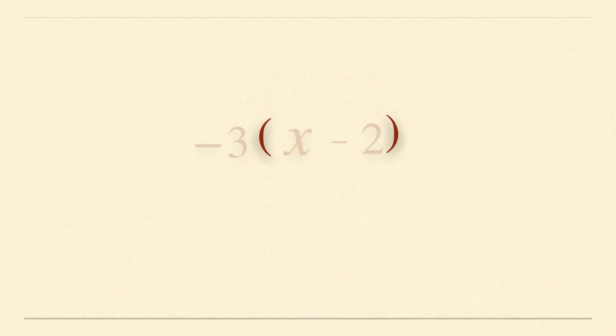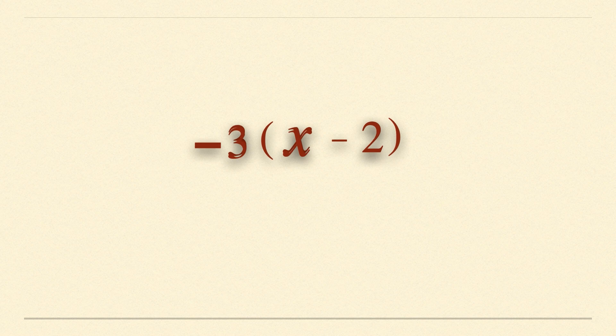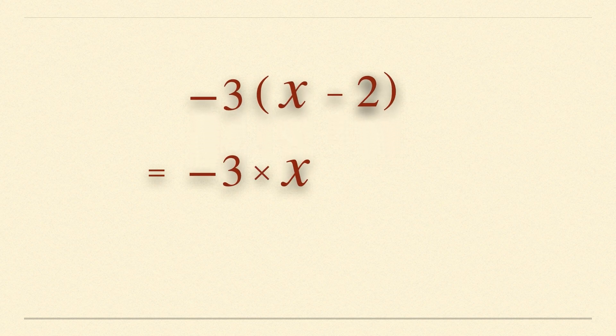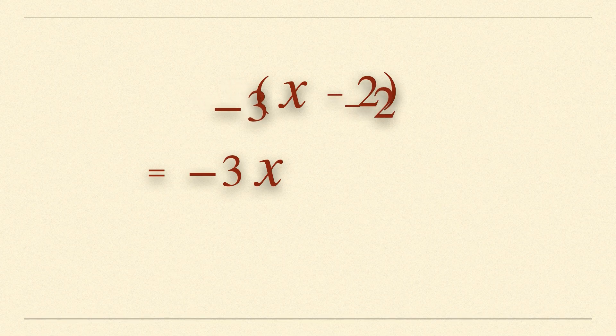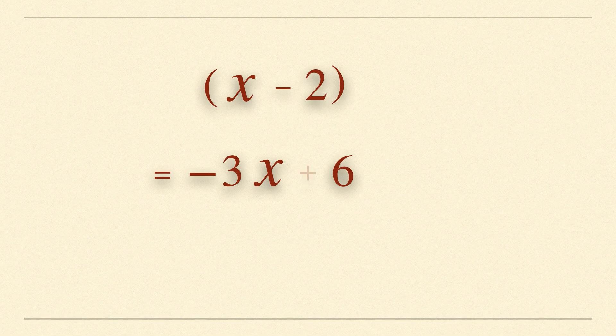When multiplying by negative number, you must also take care of the sign of each term. Multiply minus 3 with x to give minus 3x and multiply minus 3 with minus 2 to give plus 6. Remember minus and minus multiplies to give you positive value. So always watch out for this.